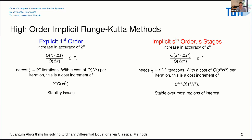First, about Runge-Kutta methods. If you have an explicit first-order method and you want to increase the accuracy by 2 to the power of n, you also need to make 2 to the power of n more iterations. The costs for explicit methods are quite cheap — imagine a matrix multiplication where n is your problem size, then this is about n squared. However, explicit first-order methods have a lot of stability issues, so you cannot scale your delta t arbitrarily.